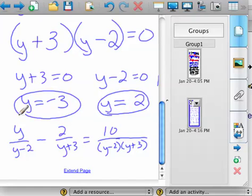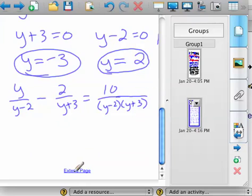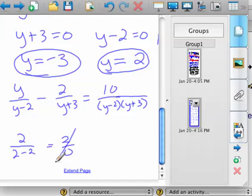So take these 2 numbers and plug them in. Let's take the 2 first. If you plug 2 in just to that first part, you'd have 2 over 2 minus 2. Well, that's 2 over 0. That's undefined. So we can't have that. So y equals 2 is not a solution to this.